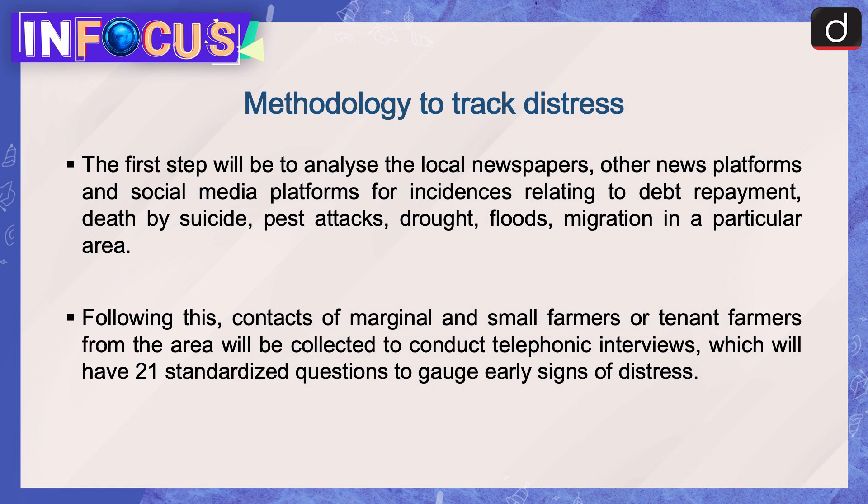Moving on to methodology to track distress: the first step will be to analyze local newspapers, other news platforms and social media platforms for incidences relating to debt repayment, death by suicide, pest attacks, drought, floods, and migration in a particular area. Following this, contacts of marginal and small farmers or tenant farmers from the area will be collected to conduct telephonic interviews, which will have 21 standardized questions to gauge early signs of distress.